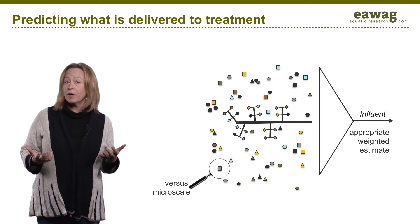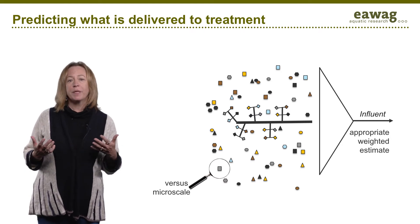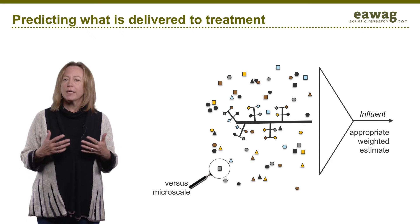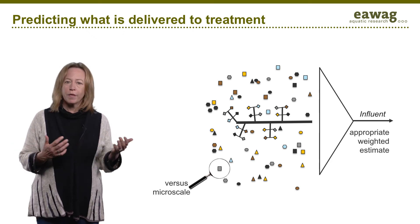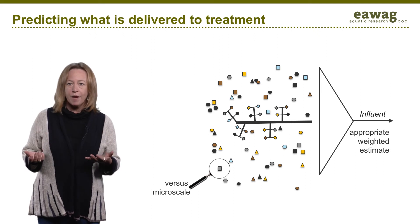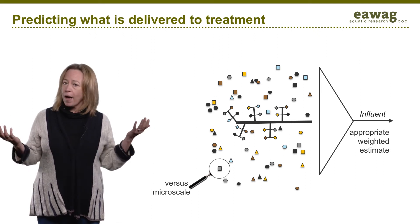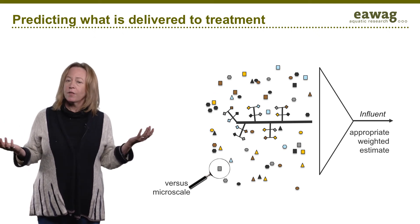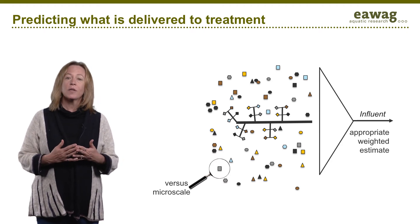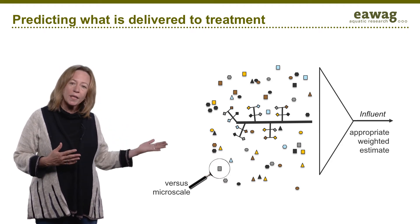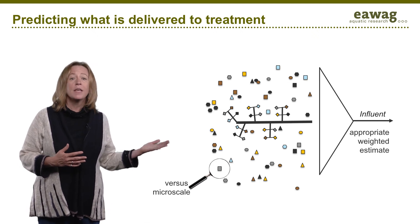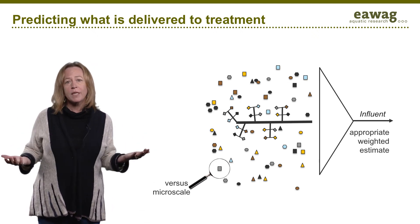This is a similar concept to modeling population dynamics. If you want to know how a population of insects are moving through a field, you would not take one insect and look at it under the microscope — you would have to zoom out and look at the population as a whole. Similarly, we cannot look inside one individual pit latrine at a microscopic level to make predictions at the community level.